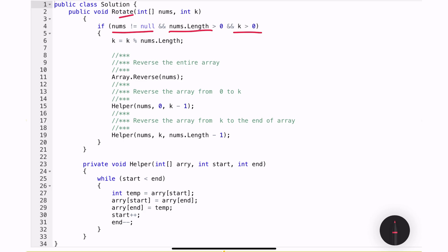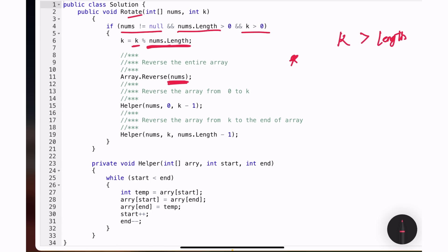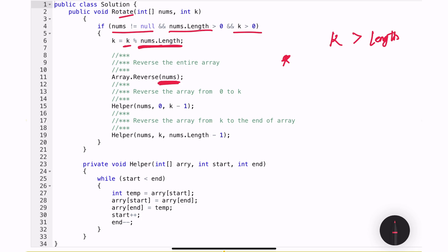The next step, I am doing a mod on the value of k based on the length of the nums array. This is to cover the scenario if the value of k is greater than the length of the array. After that, I am reversing the input array completely from start all the way to the end.